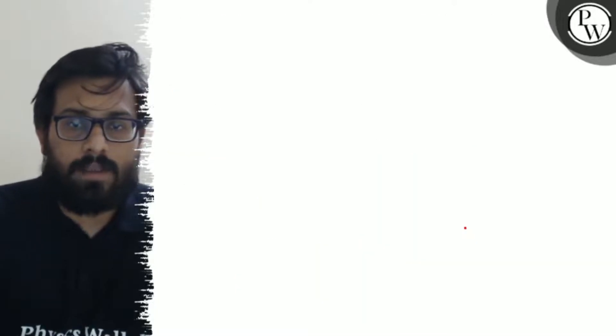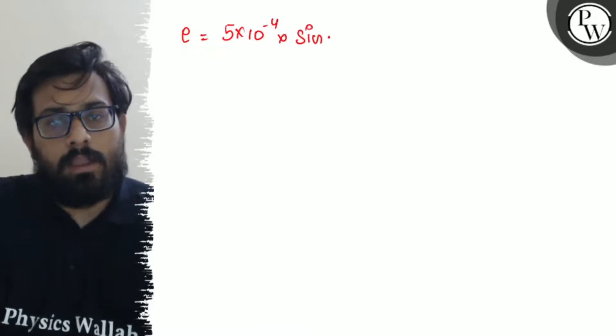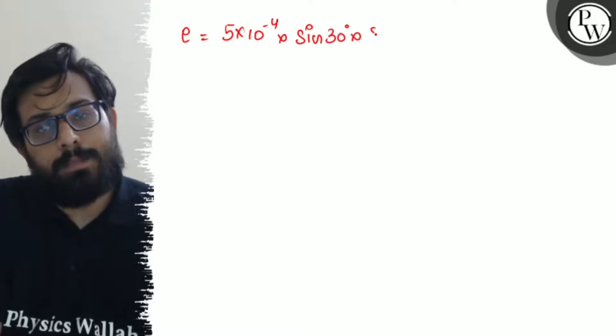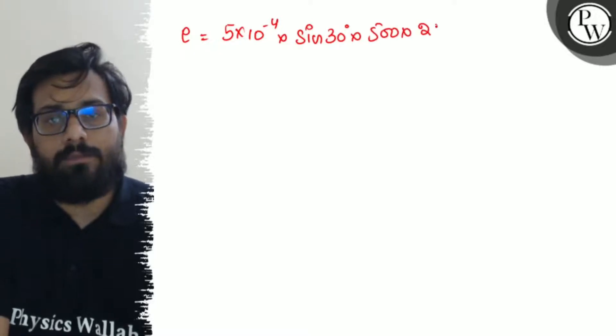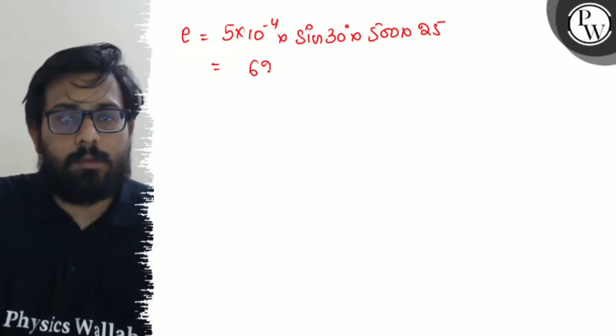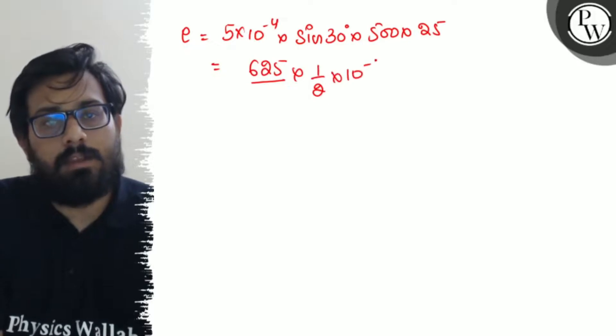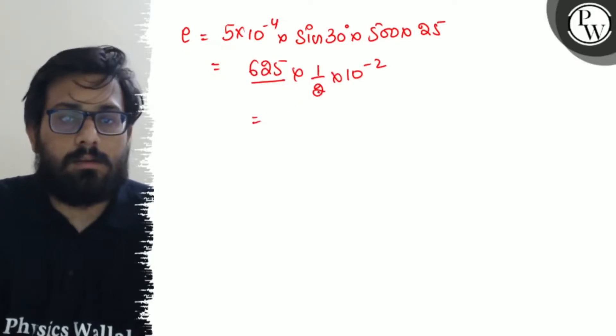So this is 5 into 10 to the minus 4, into sine of 30 degree, into speed 500, and length is 25. And this comes to 6.25, sign divided by 2, into 10 to the minus.